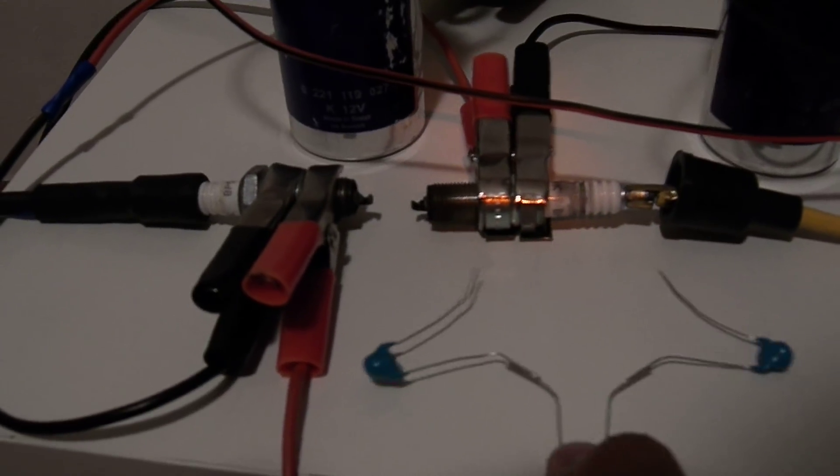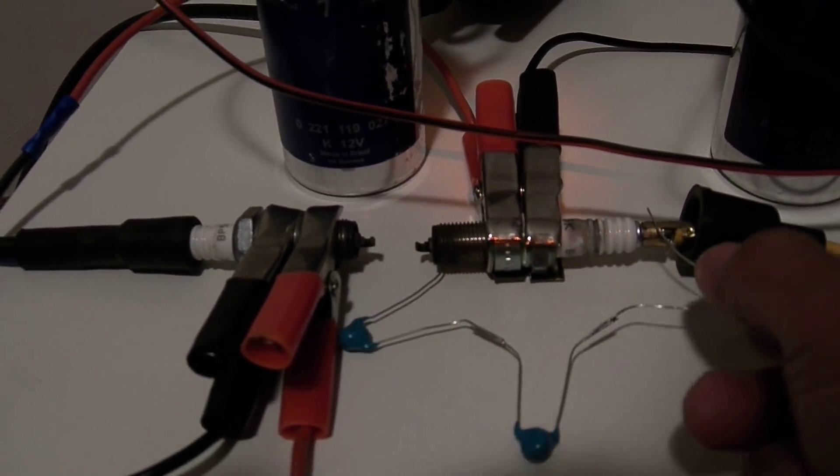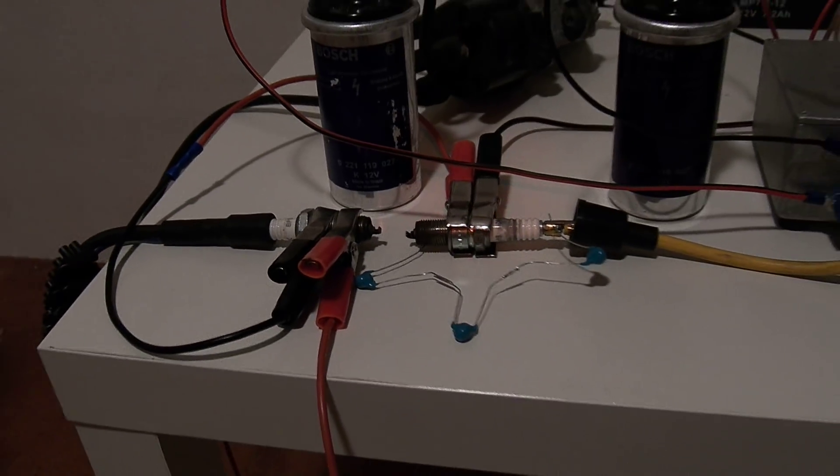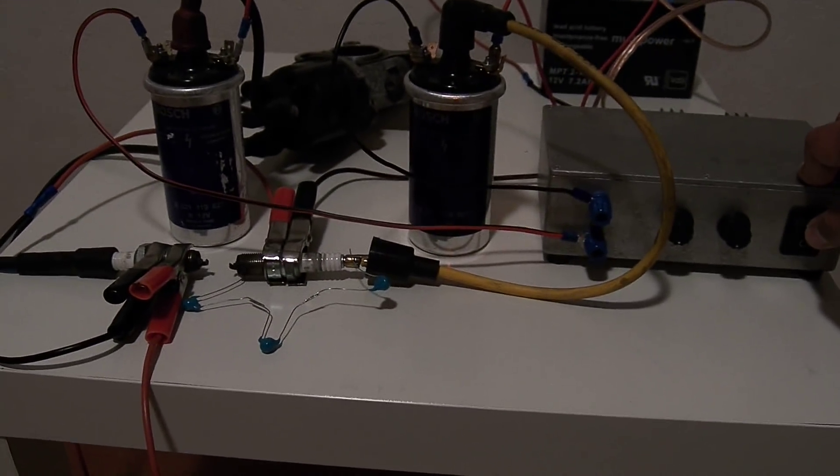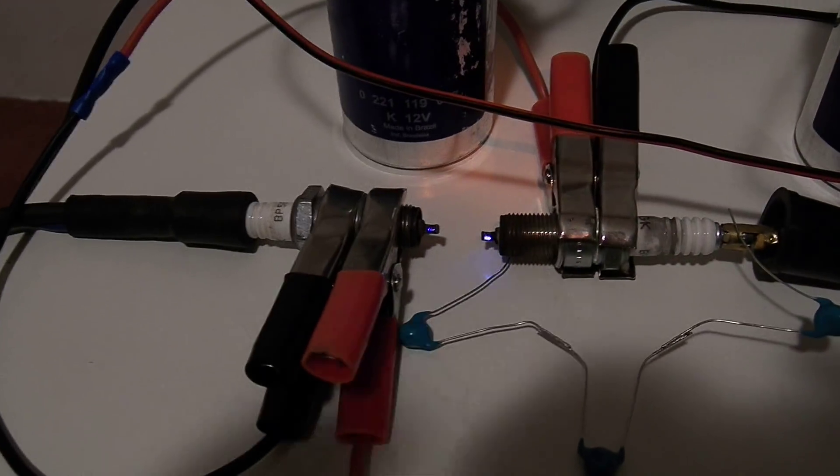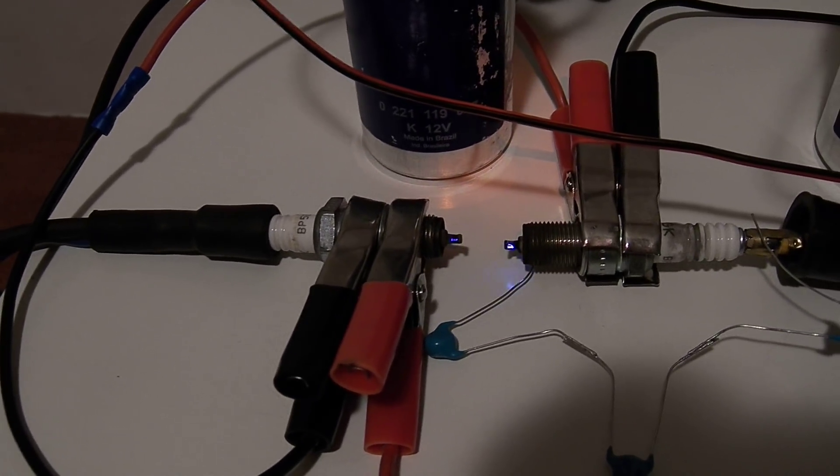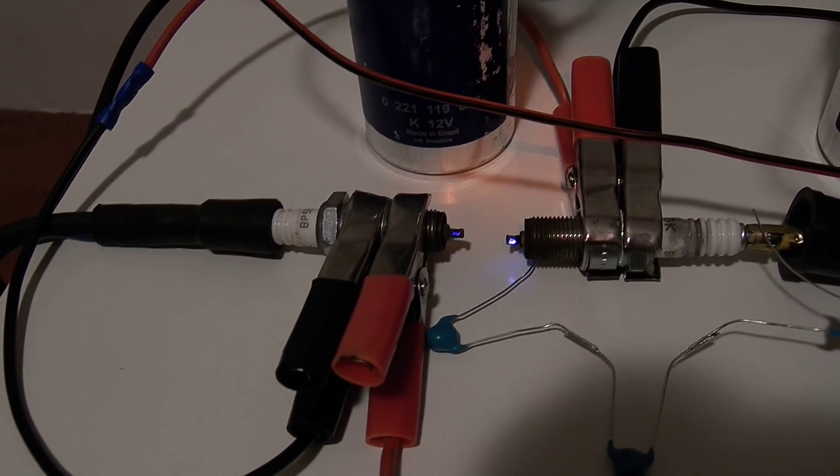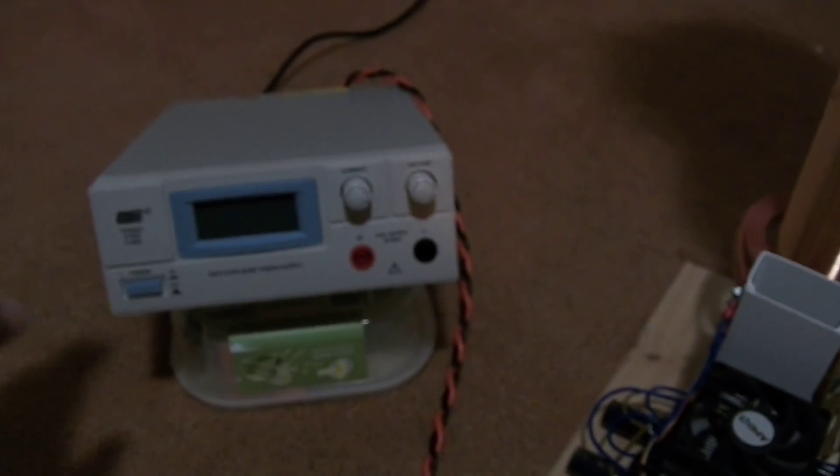These capacitors on the right side. Now I'm going to turn on again the igniter. Now you can see that the spark plugs are stronger on the right side. Now I'm going to turn on the power supply of Slayer exciter.